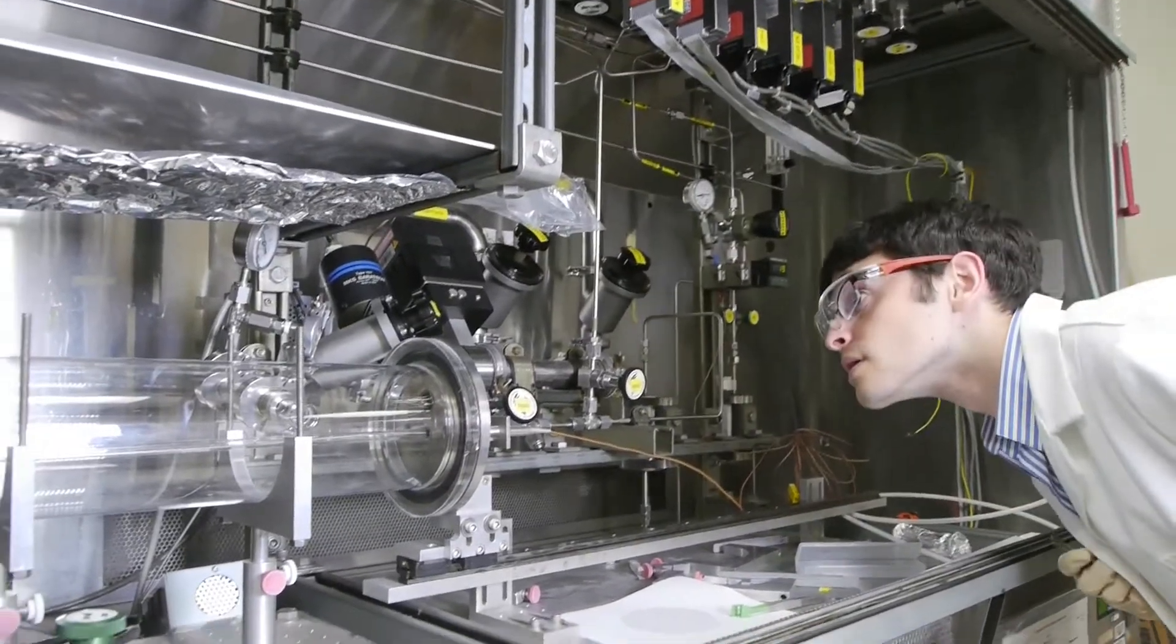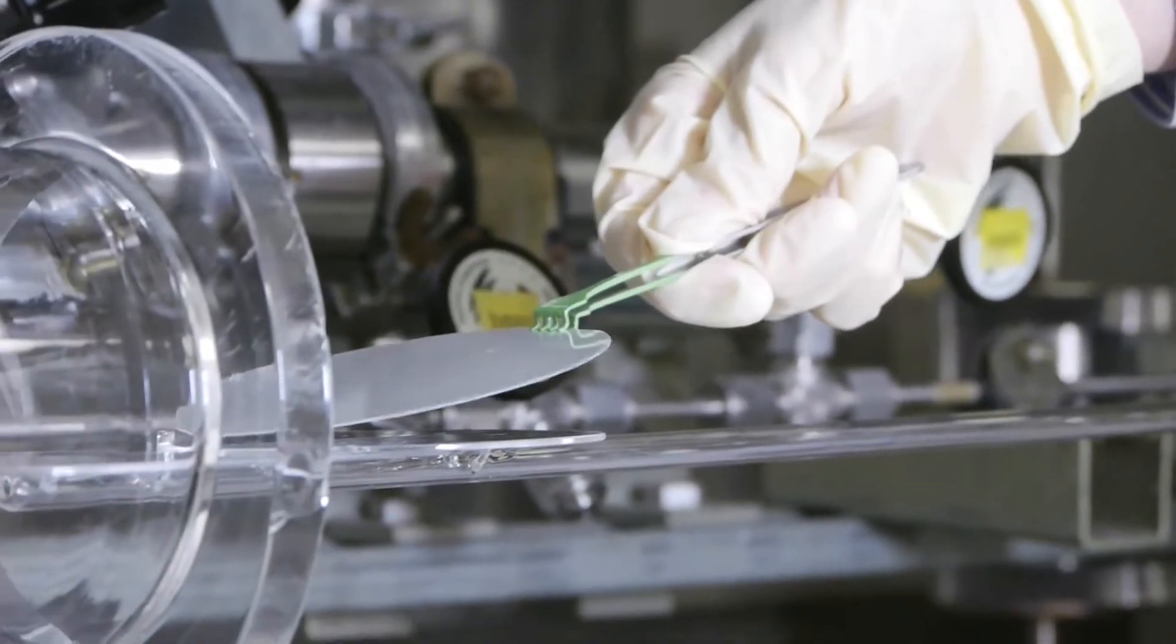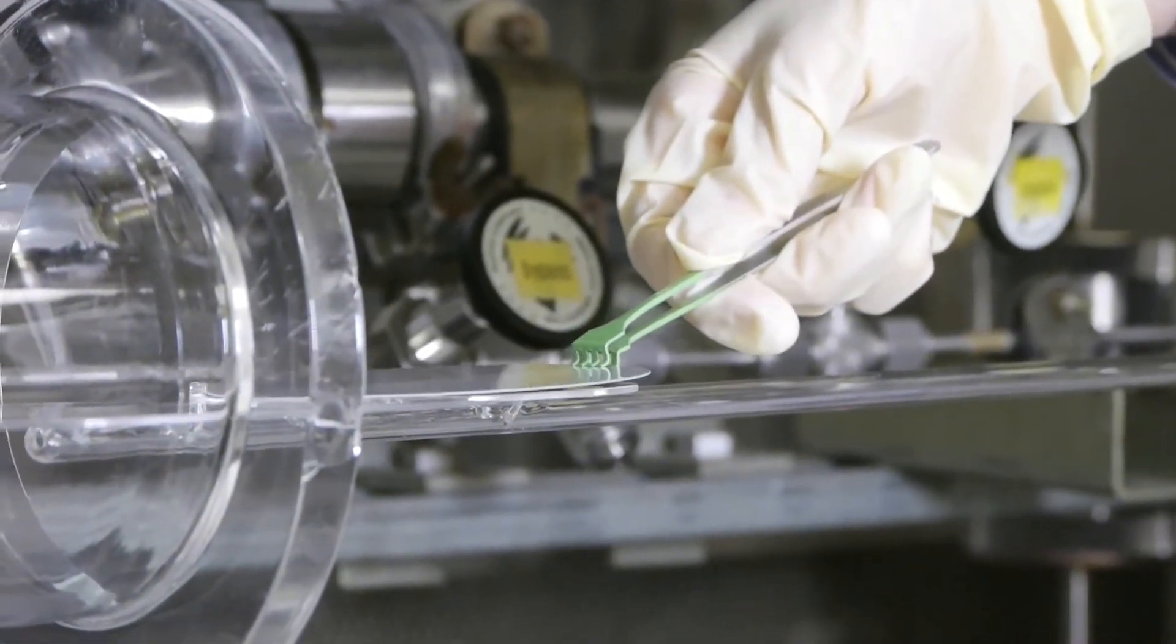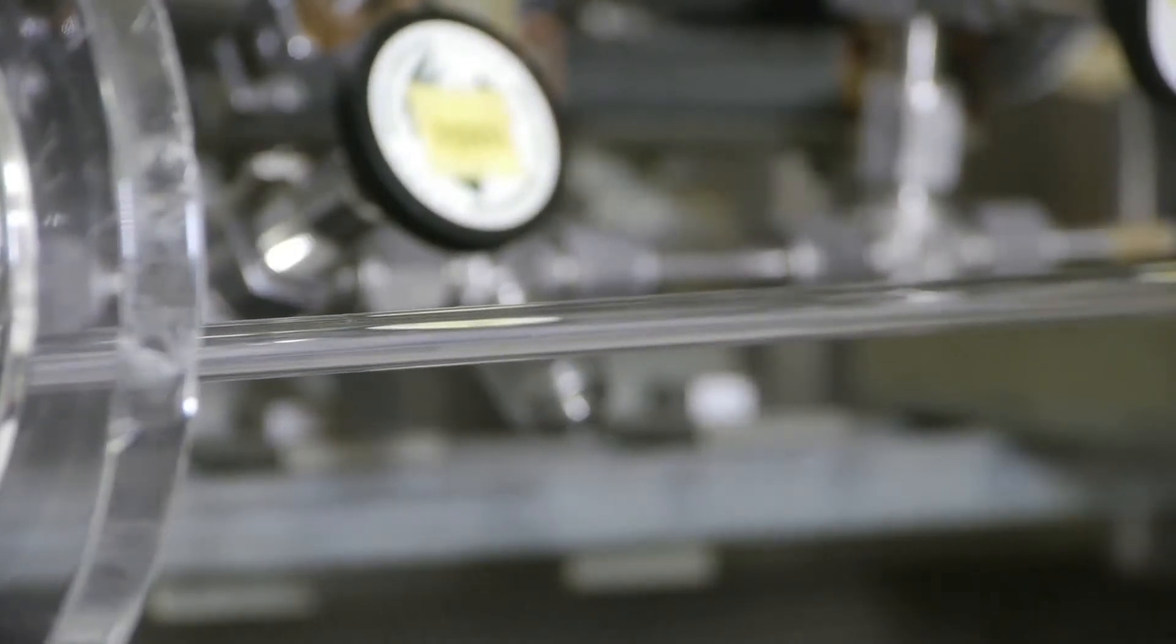It all begins in this lab, where we grow our highly aligned carbon nanotubes on our quartz wafers. We put the bare quartz wafer into the furnace, and after several hours get our grown carbon nanotubes.